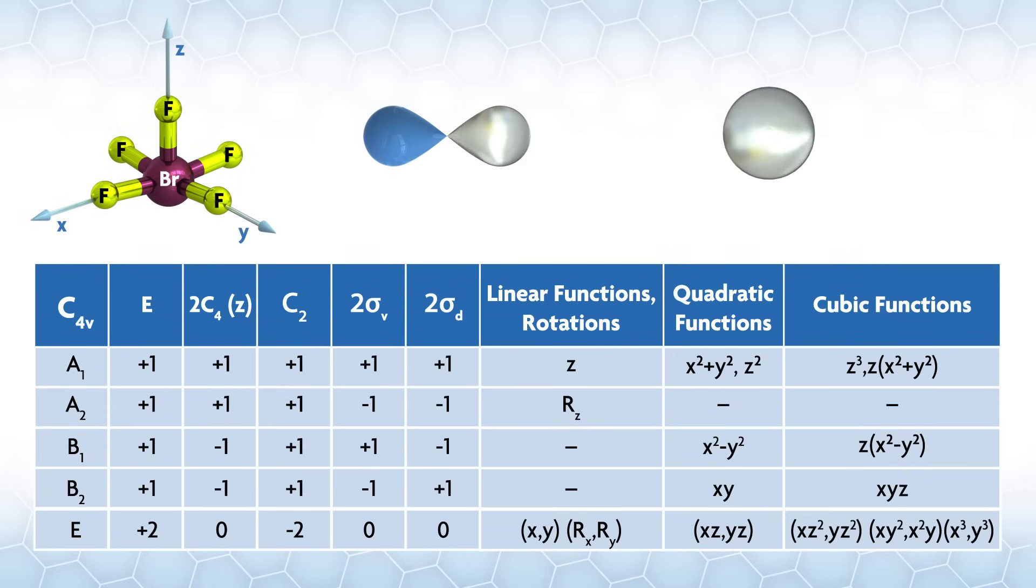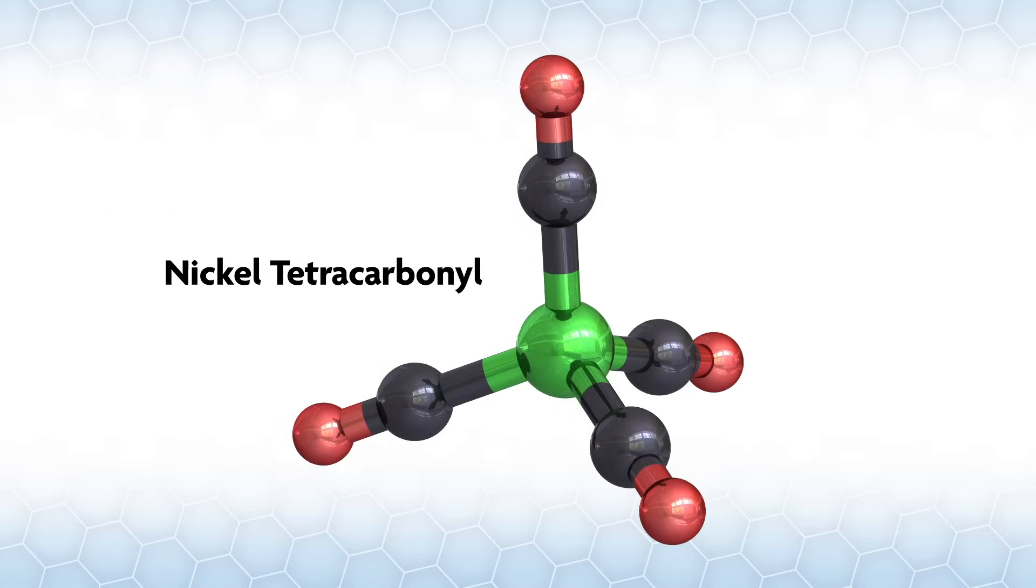Even orbitals in the same irreducible rep and on different atoms may have no significant overlap, perhaps due to being too far away.